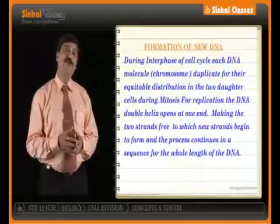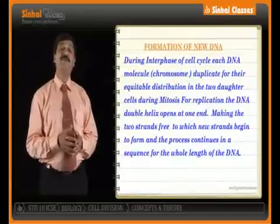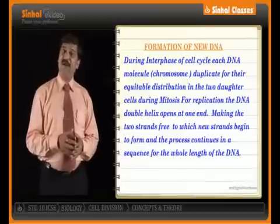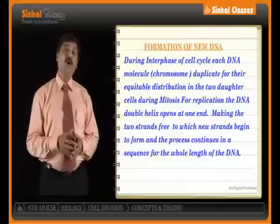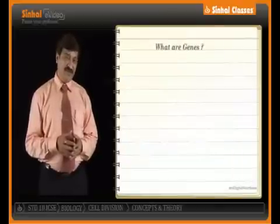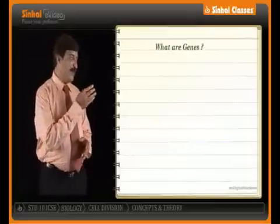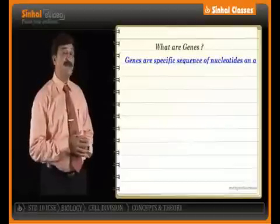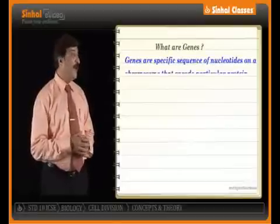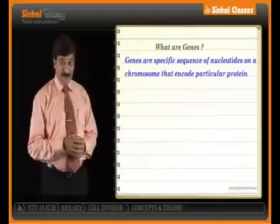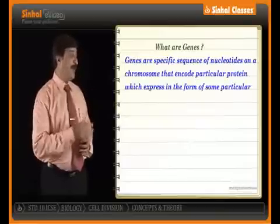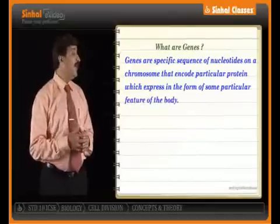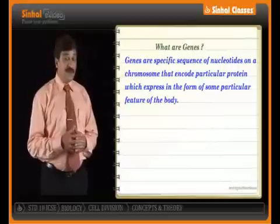Here, a process of replication results in the formation of daughter DNA. We will conclude the chapter with what is genes. When we are talking about genes, genes are specific sequences of nucleotides on a chromosome that encode a particular protein, which expresses in the form of some particular feature of the body.